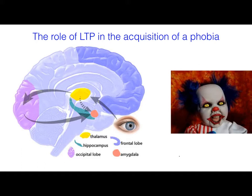It all starts with the initial registering of a threat — so we see something scary. That sensory information goes to the thalamus, the relay centre of the brain. It relays that information — the threat — to the visual cortex, but also the amygdala, the fear centre of the brain.